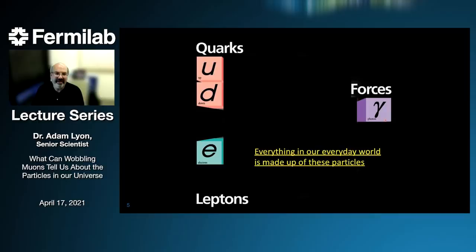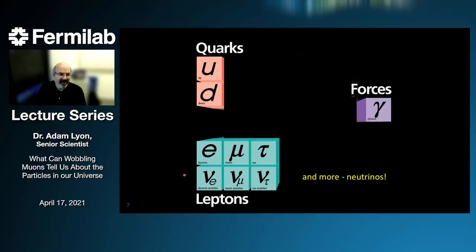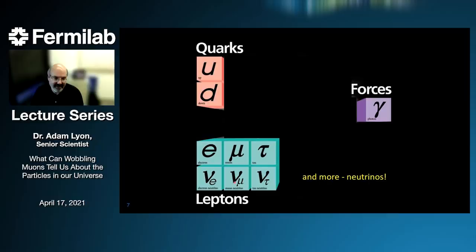There are also gluons for the strong force and photons for the electromagnetic force — in fact there are photons from your screen hitting your eyes right now. As we've done experiments and looked for more particles, we found more. The electron has heavier cousins: a particle called the muon, which we'll talk about a lot, and an even heavier cousin called the tau. Associated with each of the electron, muon, and tau are the neutrinos — collectively these are called leptons. Fermilab has become the world's premier laboratory for studying neutrinos.